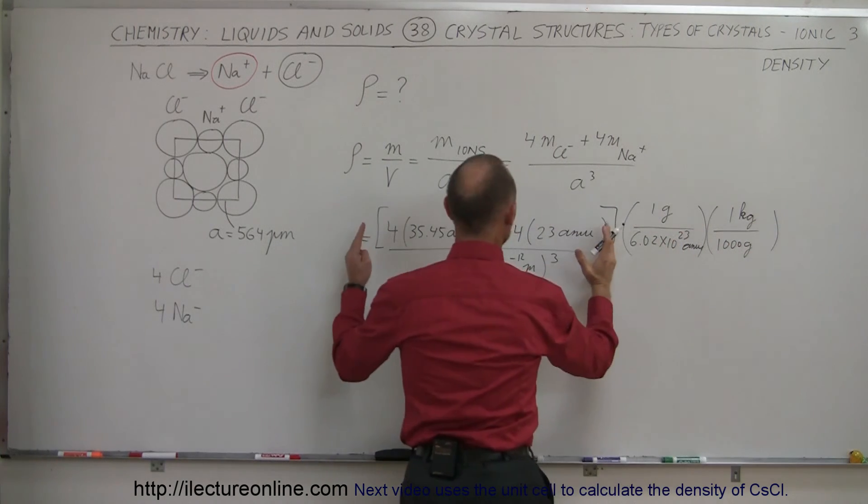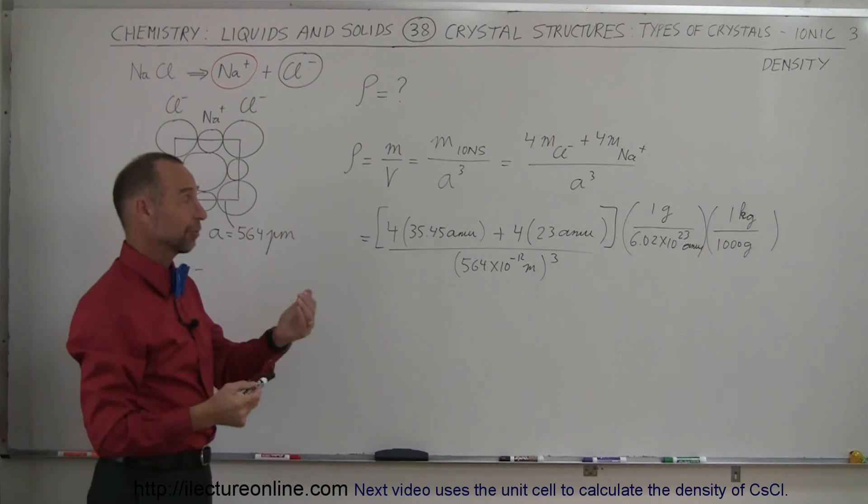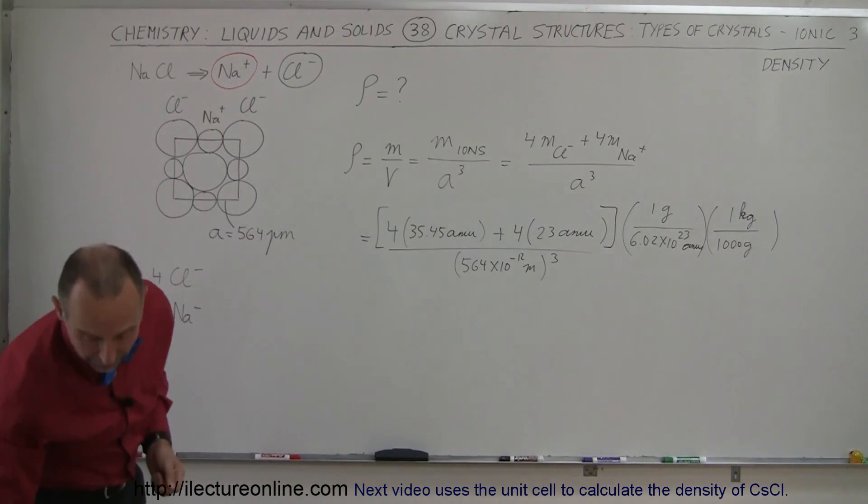So we take this and multiply by those two conversions, so we have kilograms per cubic meters, which we can then convert to grams per cubic centimeter.